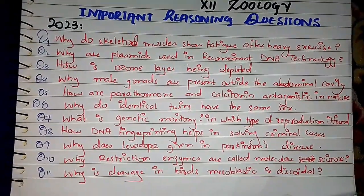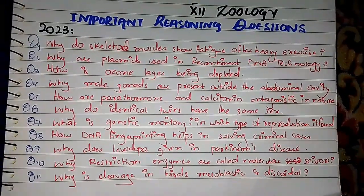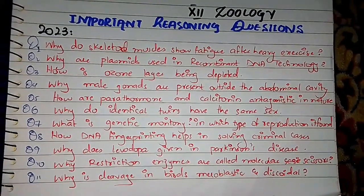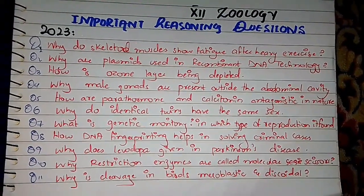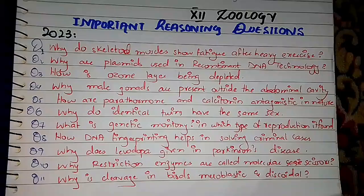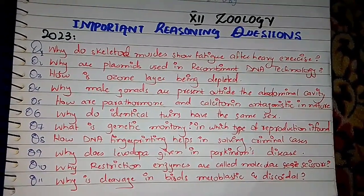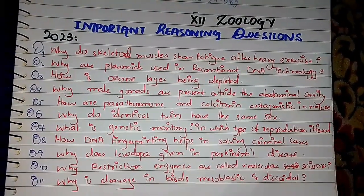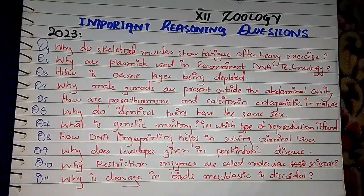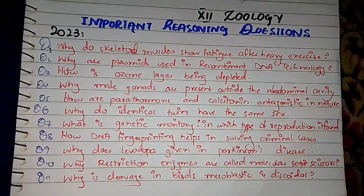Question number 8: How does DNA fingerprinting help in solving criminal cases? DNA fingerprinting is very helpful because it is very variable and different for each individual. Every person has a unique pattern of non-functional DNA which is passed to offspring in a particular pattern.